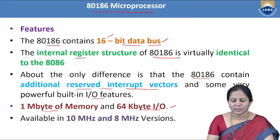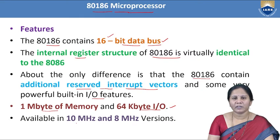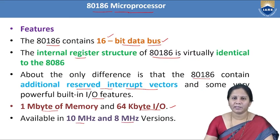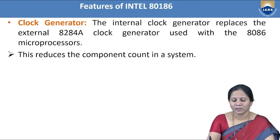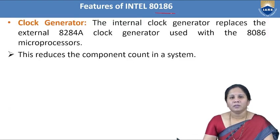The 80186 microprocessor can operate at different frequencies like 10 MHz and 8 MHz. Those are some of the features of the 80186 microprocessor.